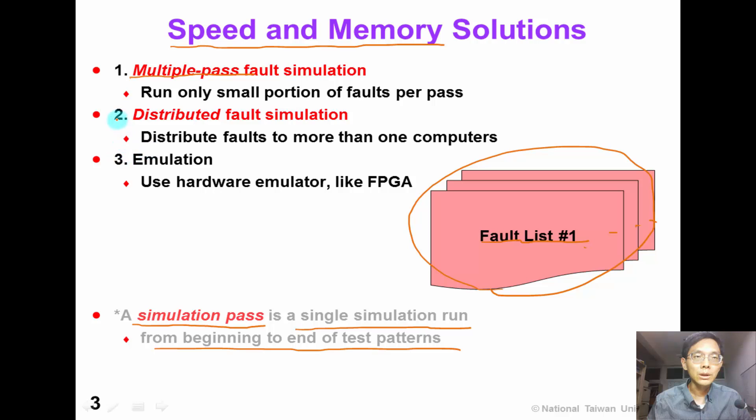The second solution is distributed fault simulation. We can partition these fault lists into smaller lists and distribute these fault lists to different machines to run in parallel. This is what we call distributed fault simulation.